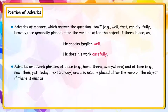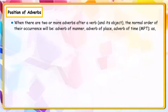Adverbs or adverb phrases of place — examples: here, there, everywhere — and of time — examples: now, then, yet, today, next Sunday — are also usually placed after the verb or the object if there is one. Examples: They will come here; We met him yesterday.